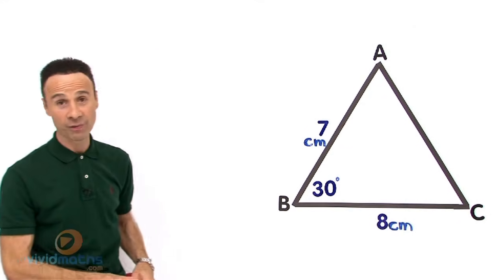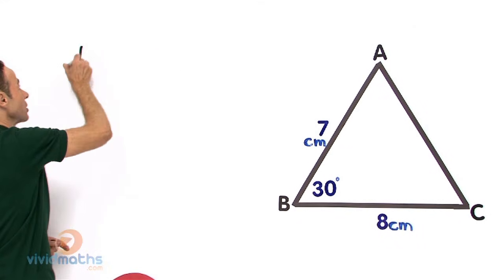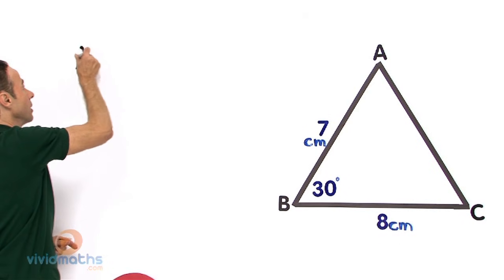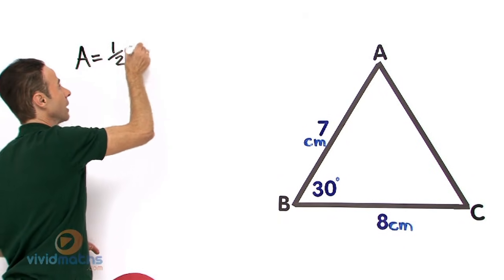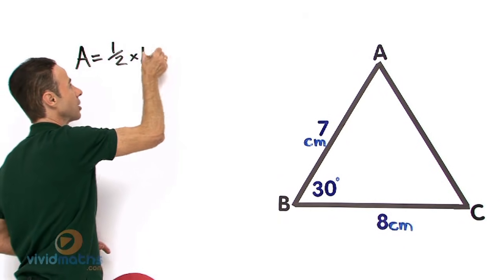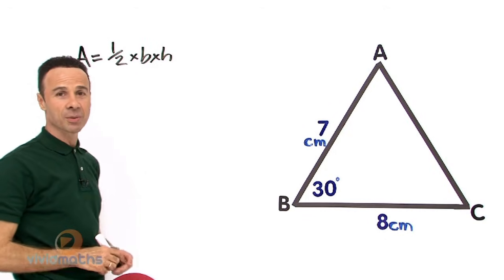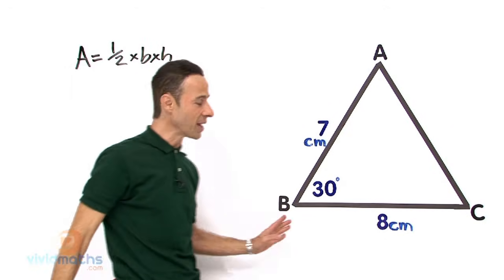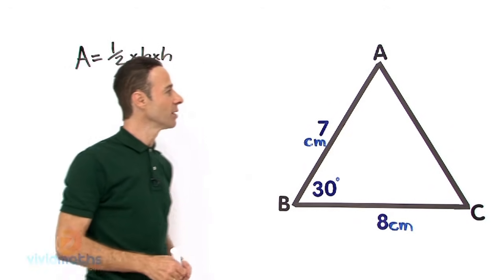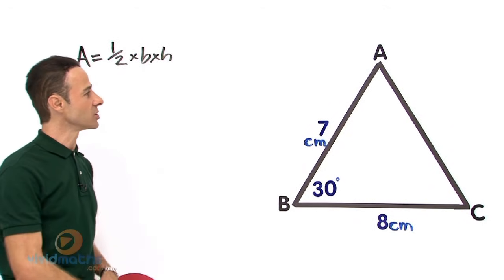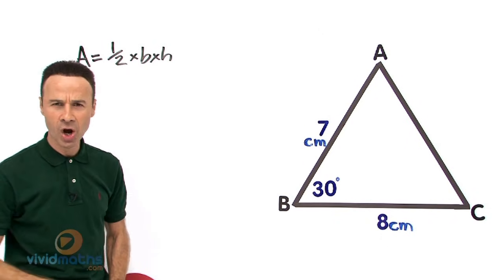Now you remember the formula for the area of the triangle — the area of the triangle is A equals a half times base times height. So what is the base for this one? The base is 8 centimeters, and the height for this one, as you can see, it does not have a height.